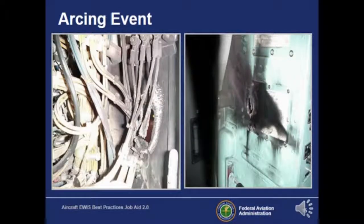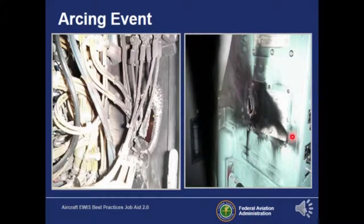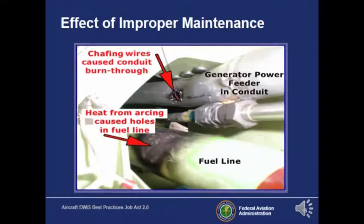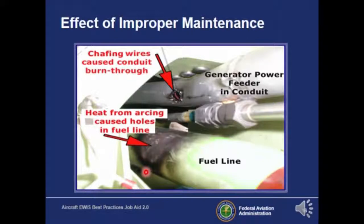Another problem is arcing. In one situation, an airworthiness certificate was moved and mechanics installed it by screwing it into the bulkhead. Unfortunately, they didn't look behind the bulkhead where power feeder wires were present — the drill went through those wires, causing arcing. In another case, wires that were chafing started to arc, heating up enough to cause a hole in a conduit that had a fuel line directly below it, causing discoloration from the heat. Thankfully it didn't ignite.